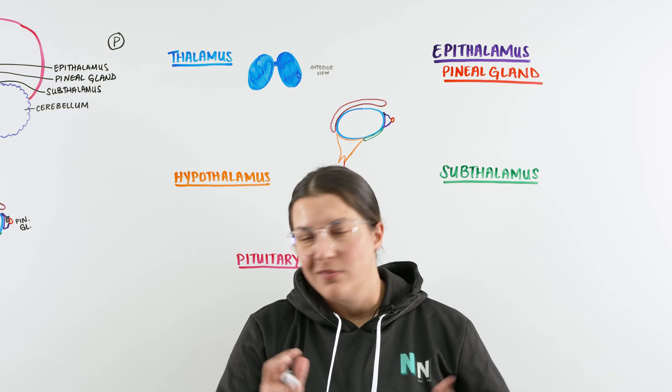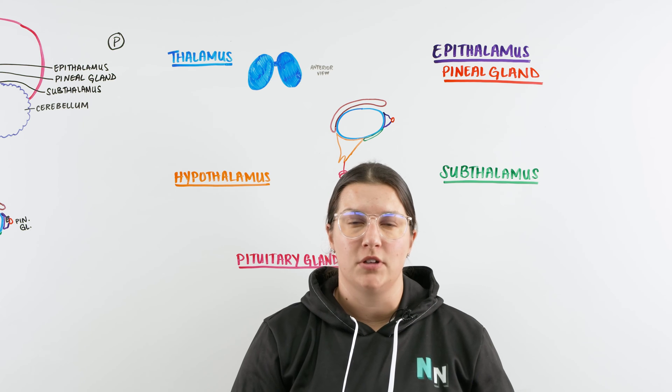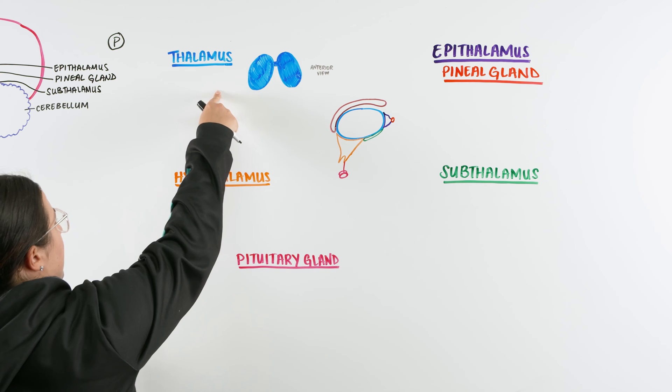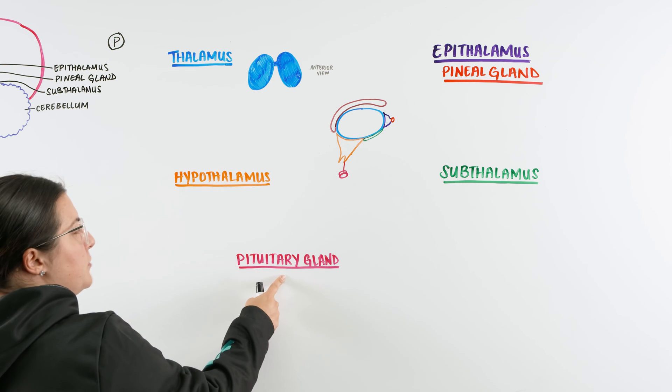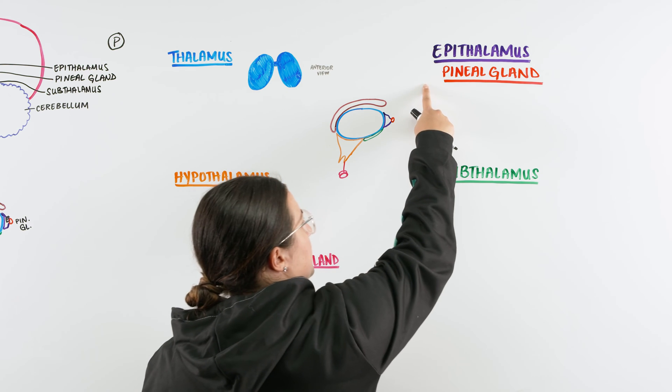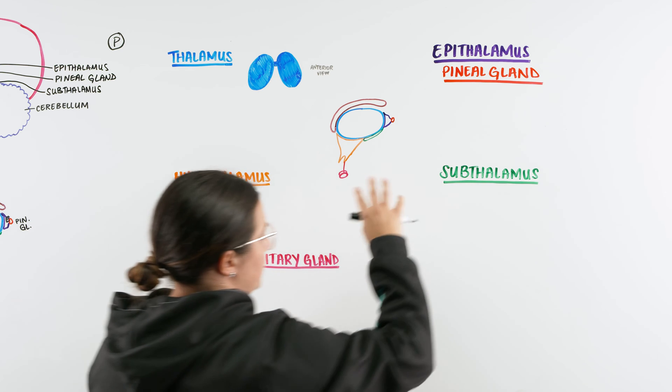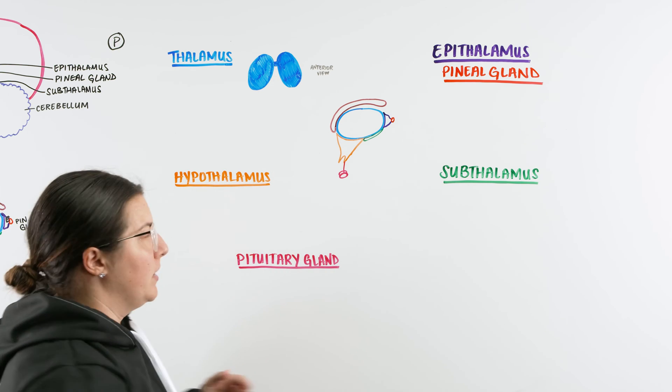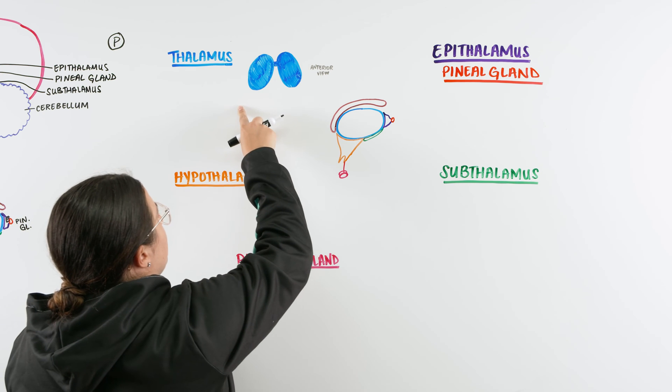There are four, really six main structures that we're going to talk about right now that compose the diencephalon. We already touched on them, right? We had the thalamus, the hypothalamus with the pituitary gland, the epithalamus with the pineal gland, and the subthalamus. Now we're just going to touch on what their function and a little more information about them. First we're going to talk about the thalamus.